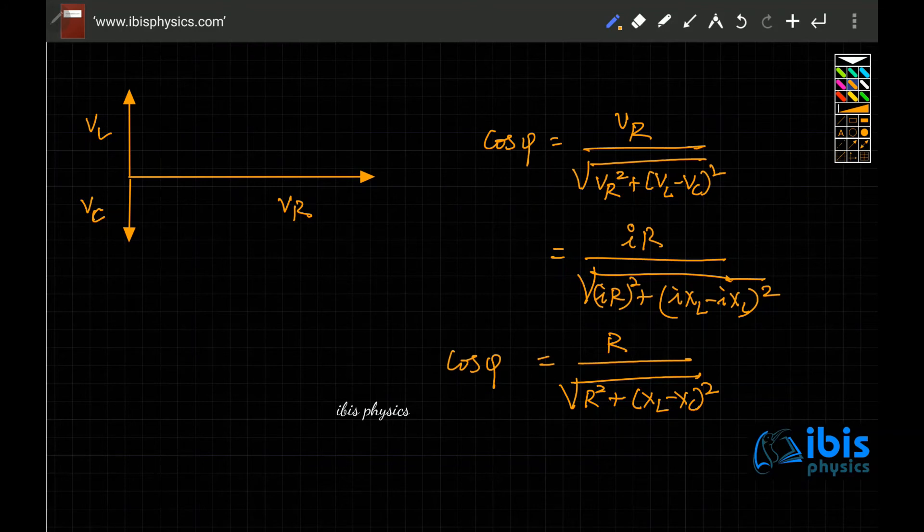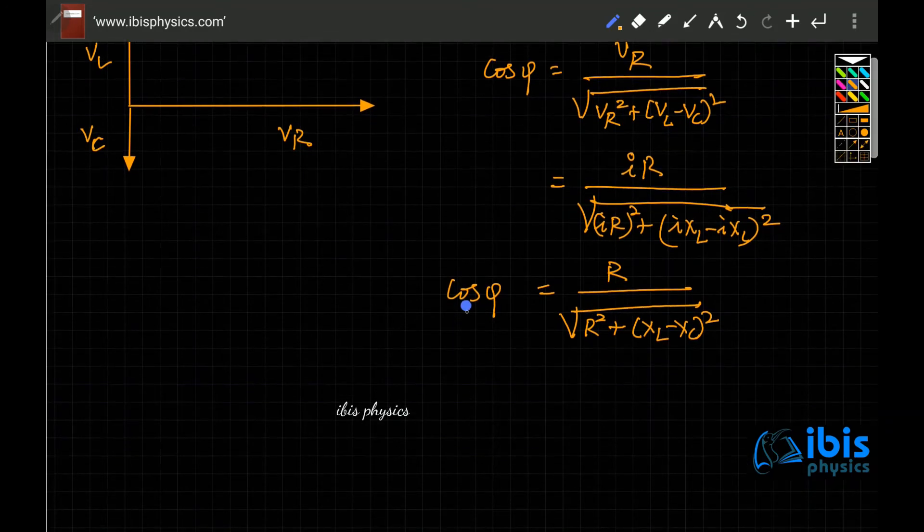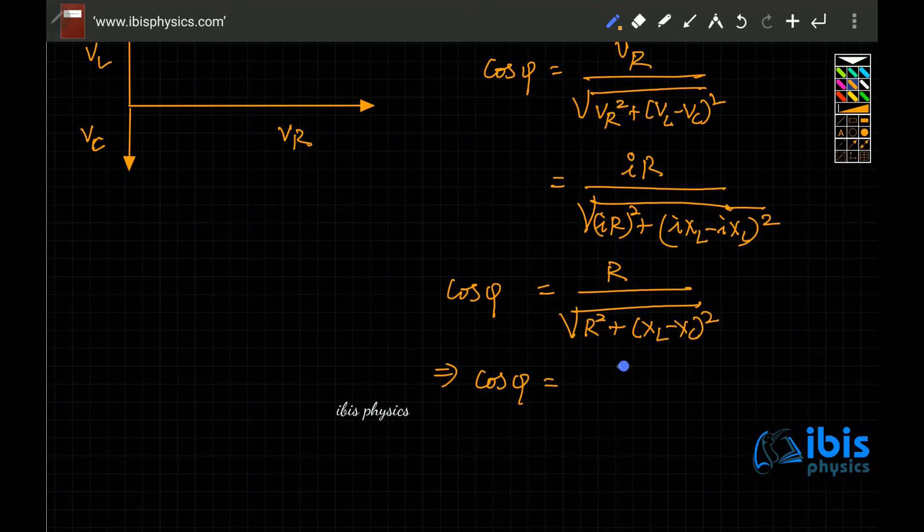In this problem number 10, what they have given is, in this series RL circuit, only R and L are there, so capacitor is not there. Then what will happen to this? If phi is the phase, cos phi is equal to R divided by root over R square plus XL square, because it is RL circuit. No capacitor is there, so naturally VC won't be there.